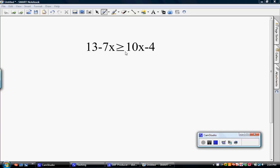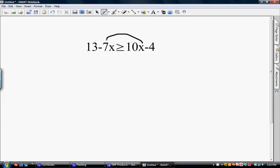So I'm going to bring the 10x over to the other side. Now remember when you move something to the other side, it changes its sign. So that's going to make that a negative 10x on this side, and it's going to take it away on that side. So on this side, I have 13 minus 17x is greater than or equal to negative 4.